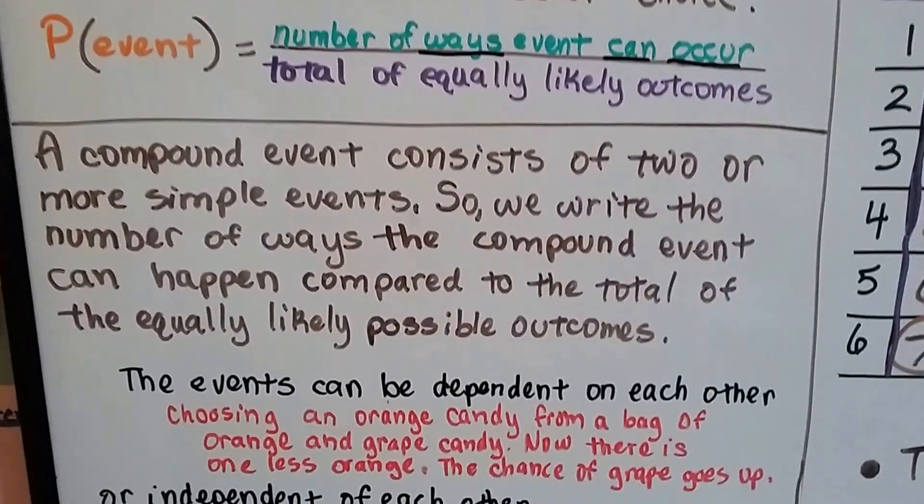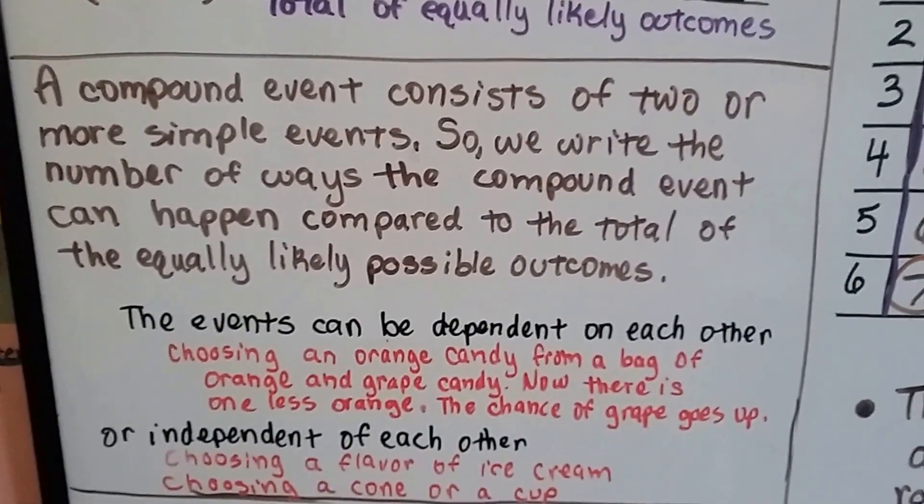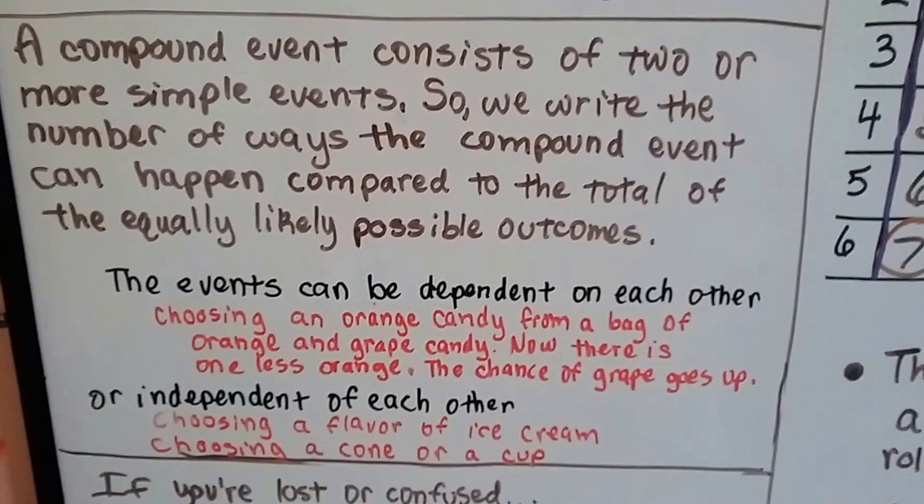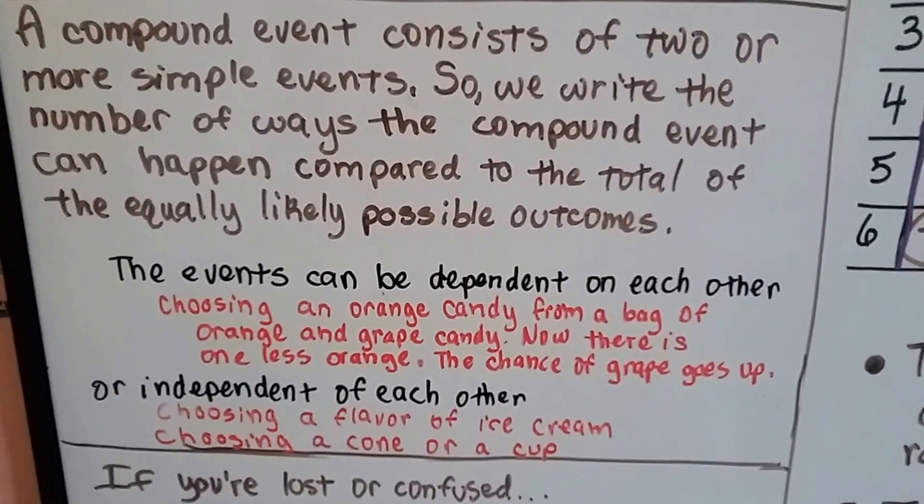Now a compound event consists of two or more simple events. So we write the number of ways the compound event can happen compared to the total of equally likely possible outcomes.